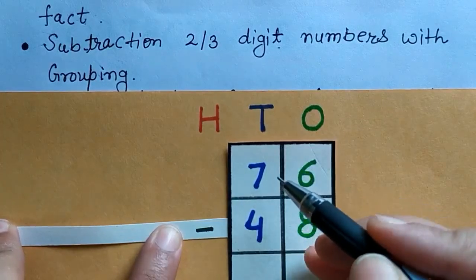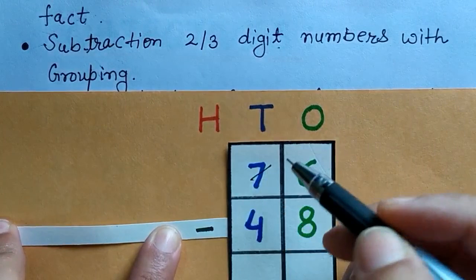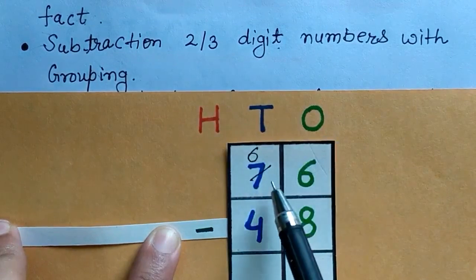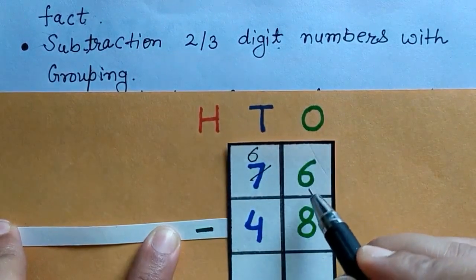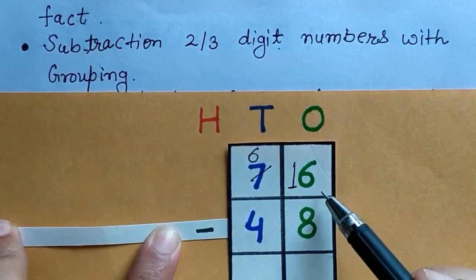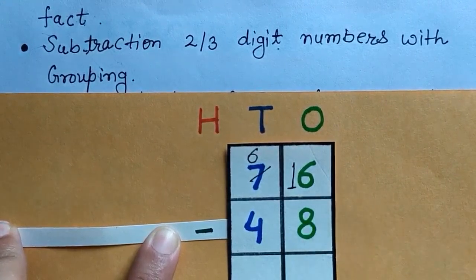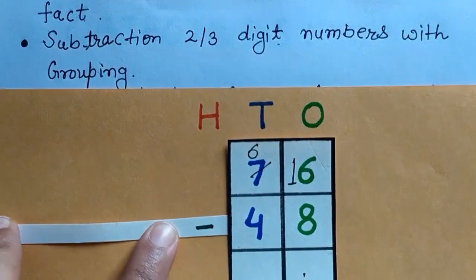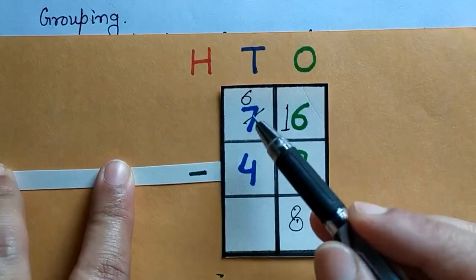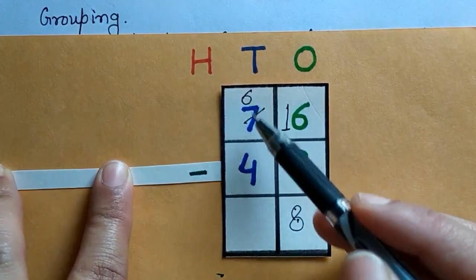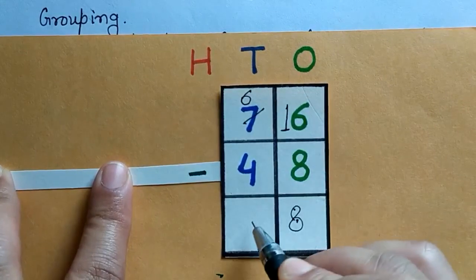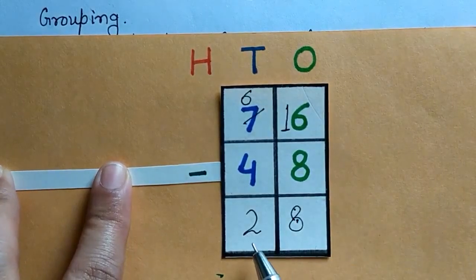7 is at 10th place, means this is 70. We will take 1 ten from here so it will remain 6 tens, and 6 will be 10 plus 6, which means 16. Now we can subtract 8 from 16, so 16 minus 8 equals 8. At 10th place, 6 and 4, we can easily subtract 4 from 6. 6 minus 4 is 2. So the answer is 28.